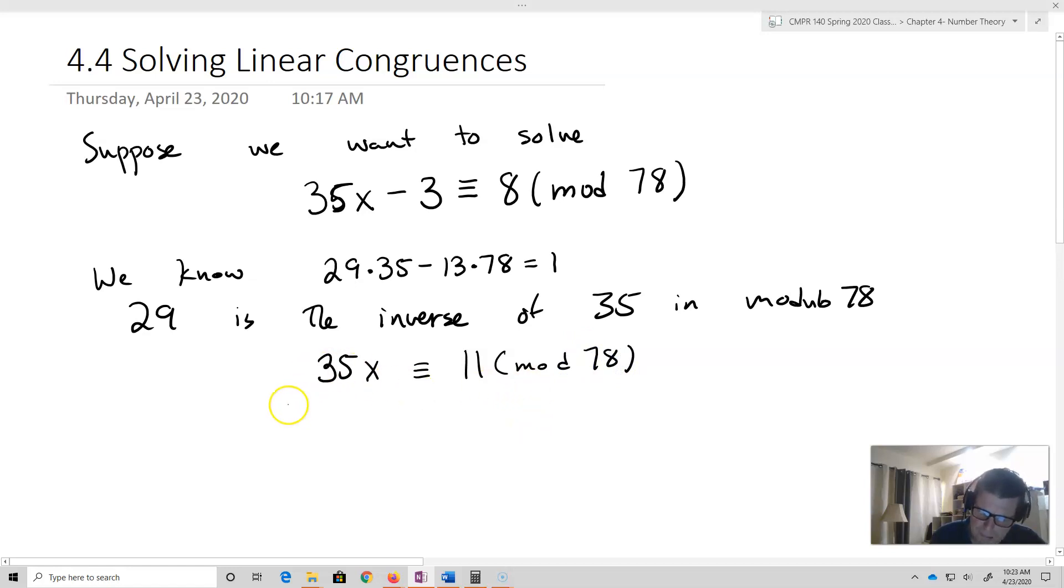Next up, I'm now going to multiply both sides by the inverse. So 29 times 35x is equivalent to 29 times 11 mod 78. Okay,